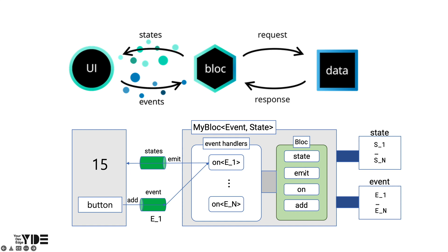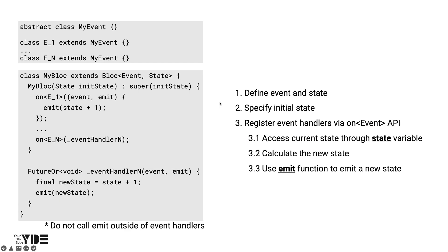The onEventHandler creates a new state value, and the current state value can be accessed through the state variable provided by Bloc. The new state value is dispatched to the stream using the emit function provided by Bloc. In the case of Bloc, if an additional value is needed to create a new state, it is transmitted as a payload of the event. To rearrange the process: first, define the event and state to be handled in MyBlock. Next, specify the initial state. If you need to provide an initial state value from the outside, you can pass any state through the constructor as shown in the picture on the left. Next, register an event handler using the onEvent API.